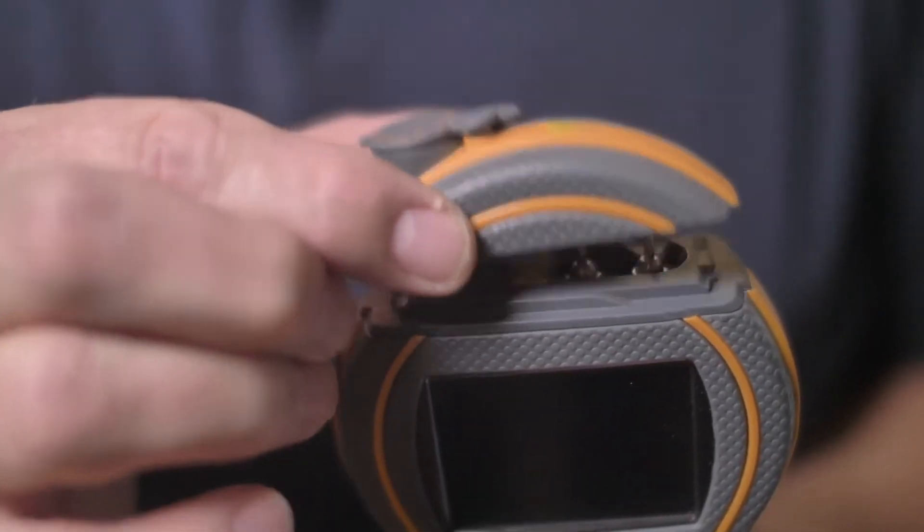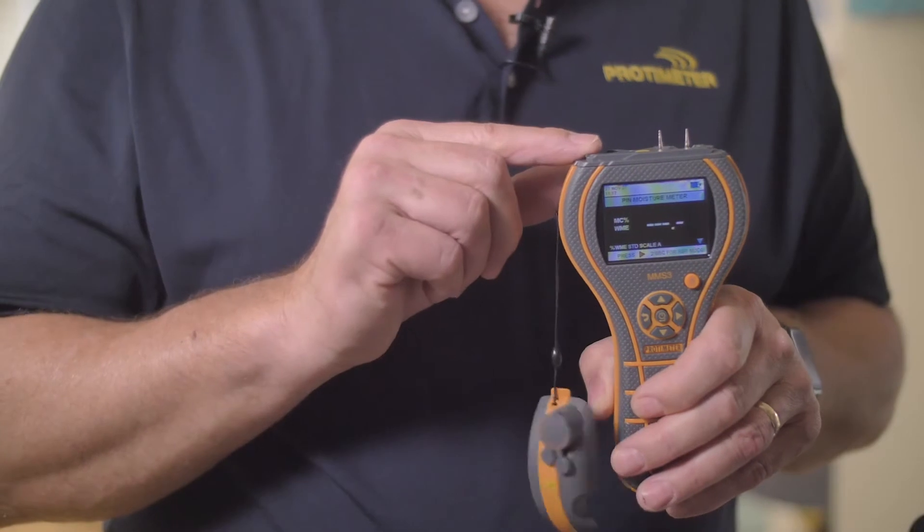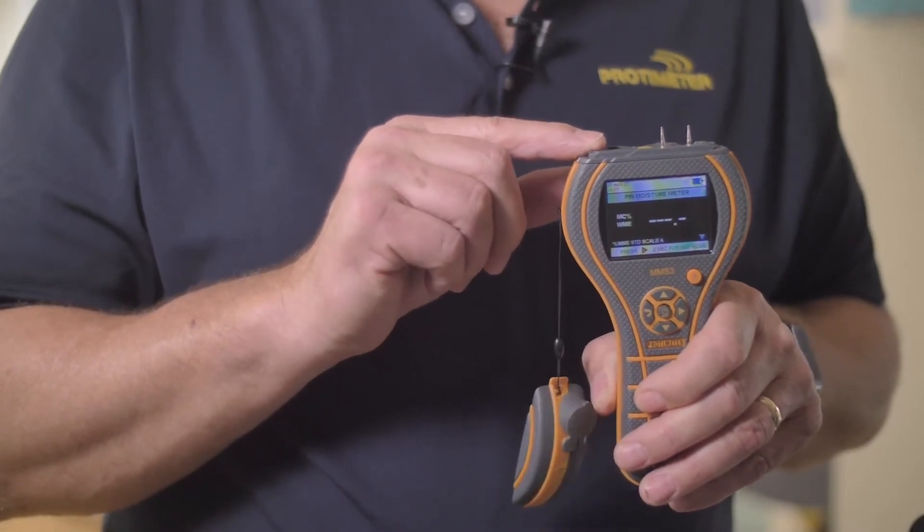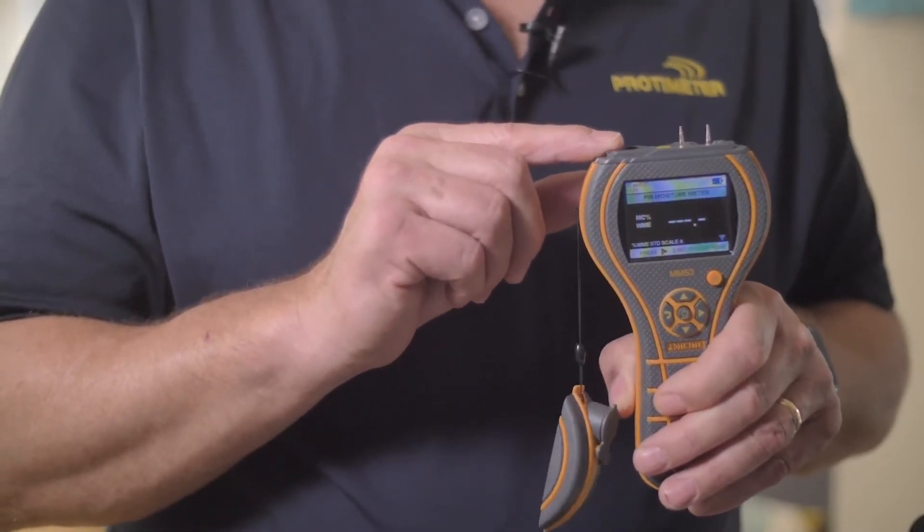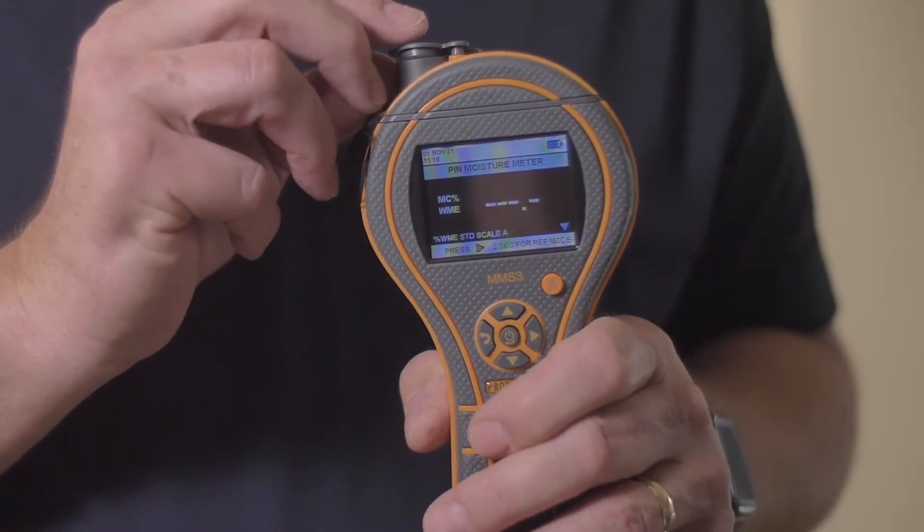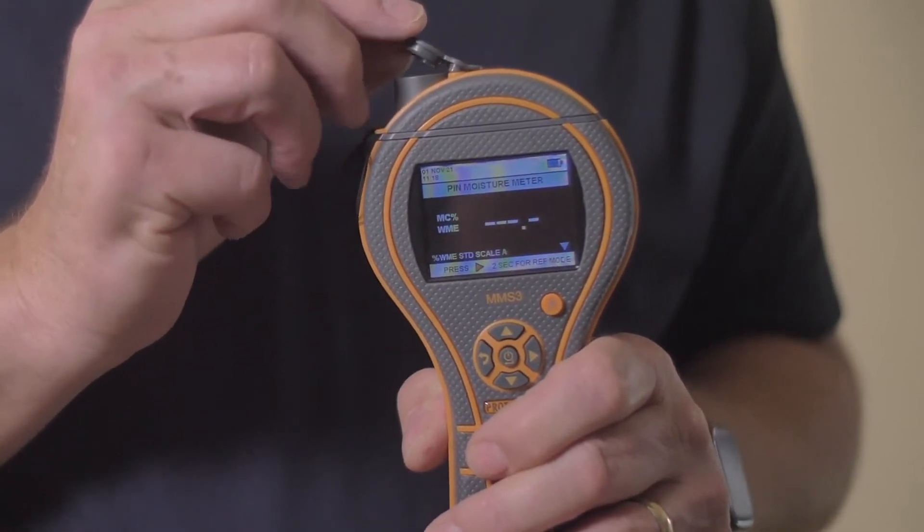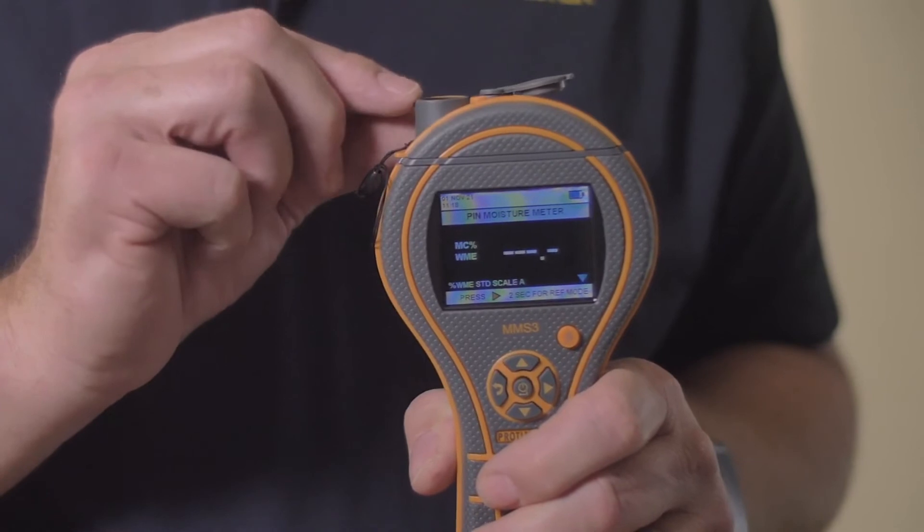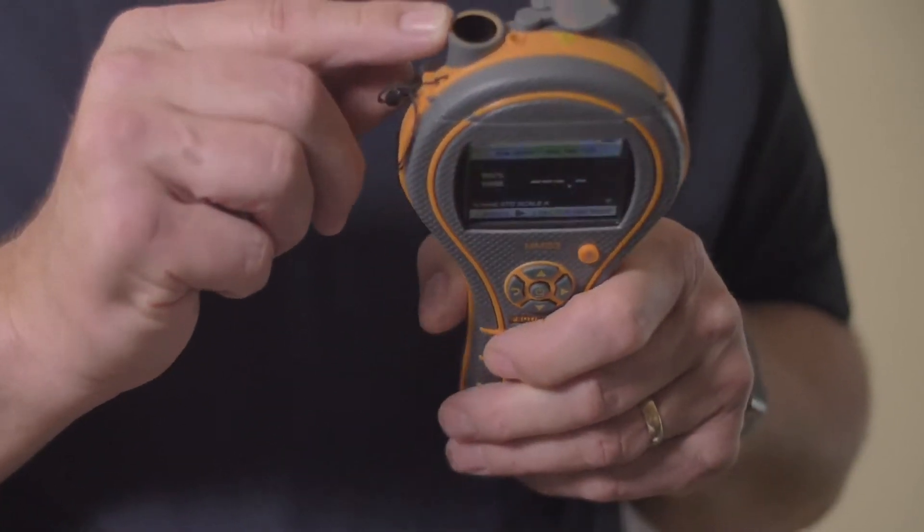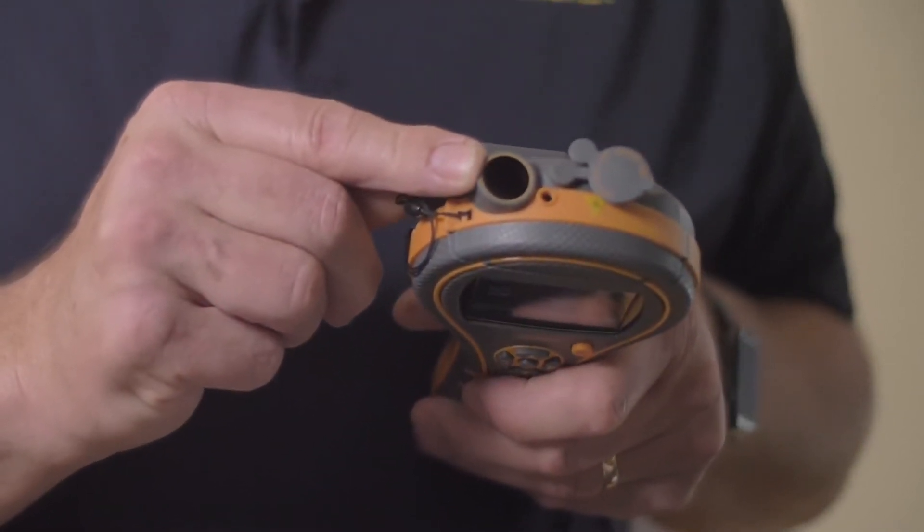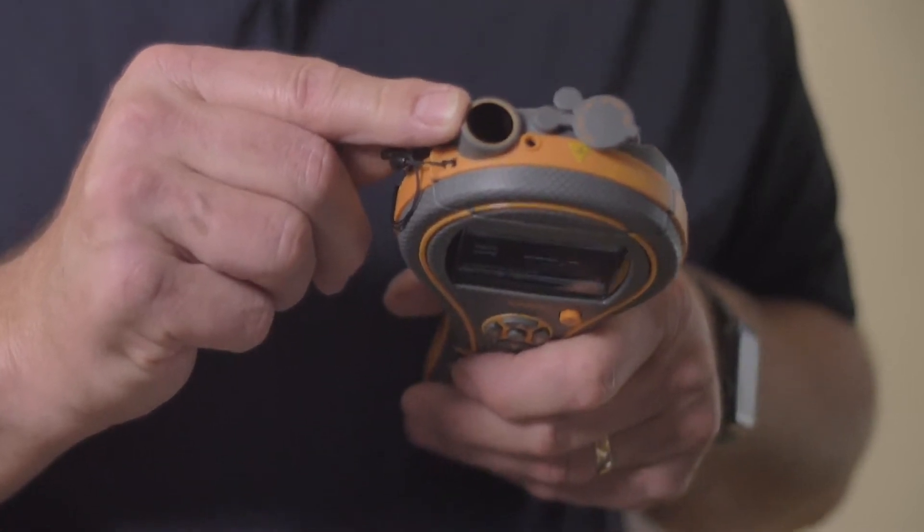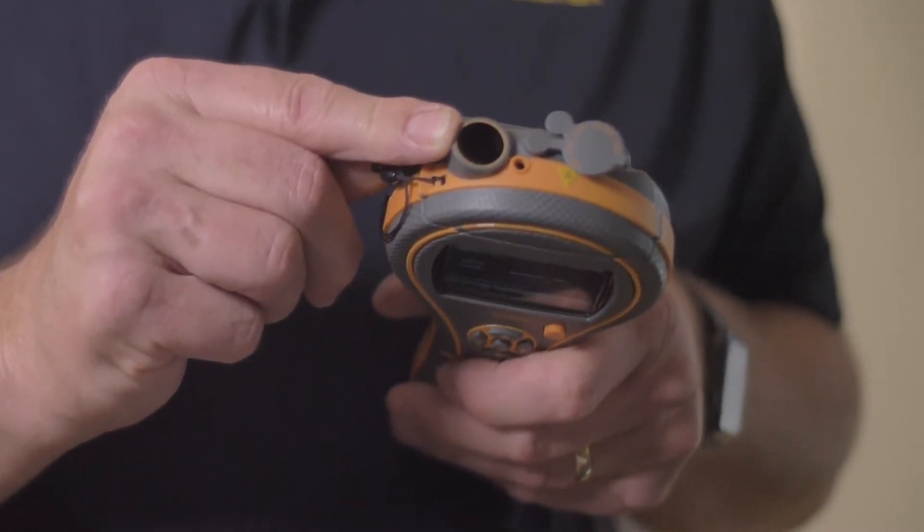Under the cap here, we can expose our pins. We'll be examining the pin moisture measurement in detail later. The fourth function is our non-contact temperature sensor here. This is useful when measuring surface temperature in a building and calculating the proximity to dew point or condensation.